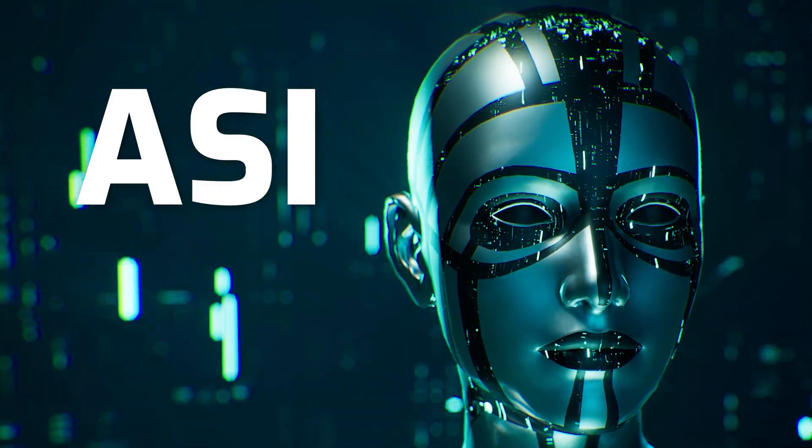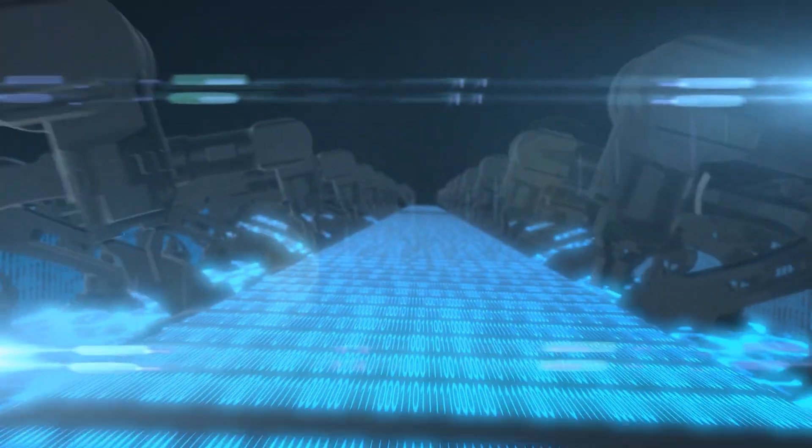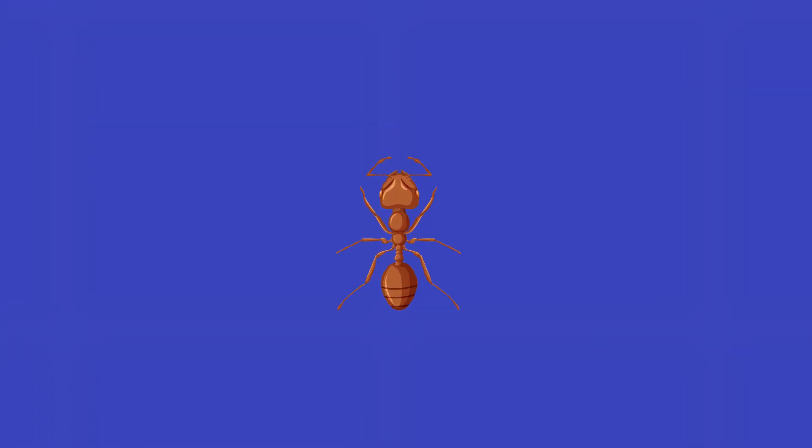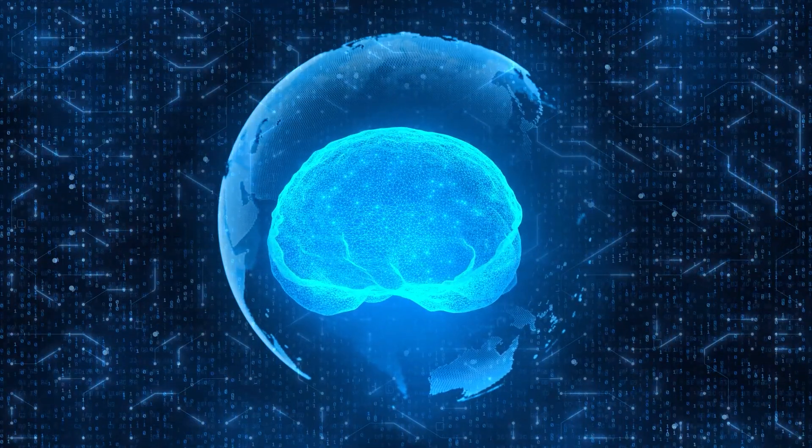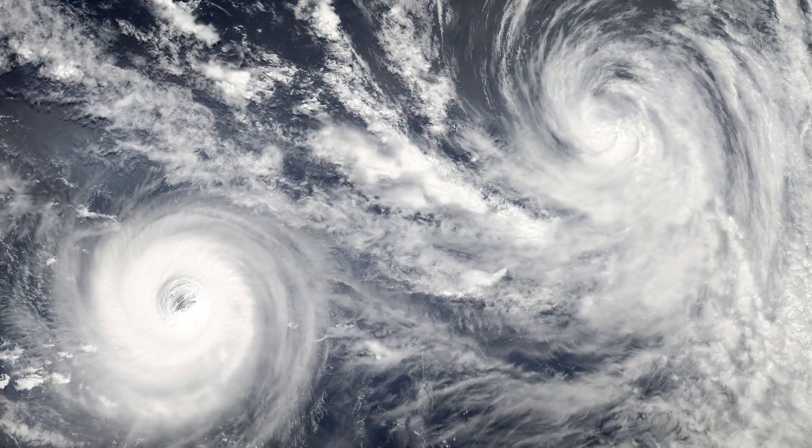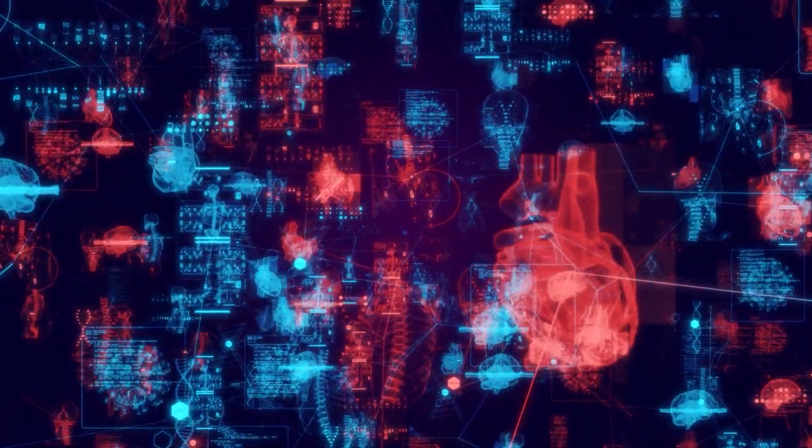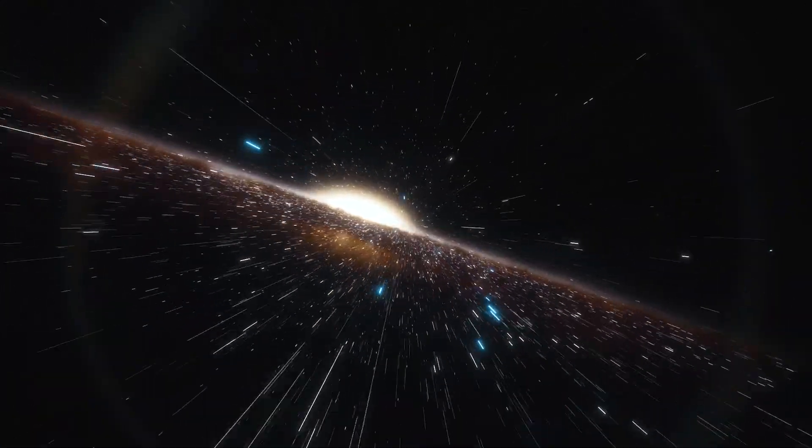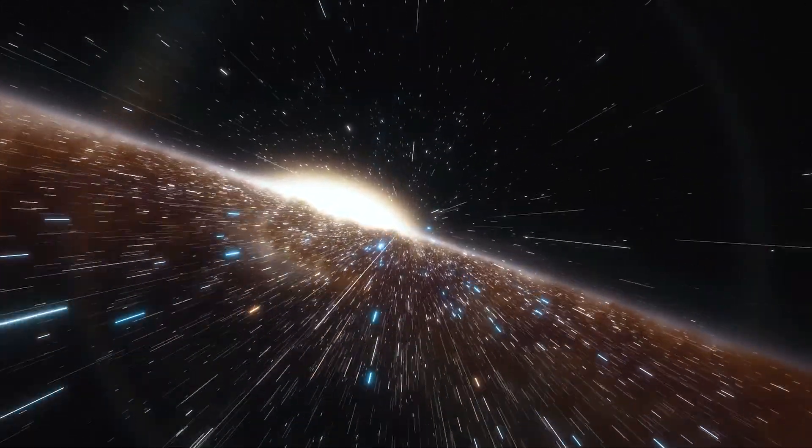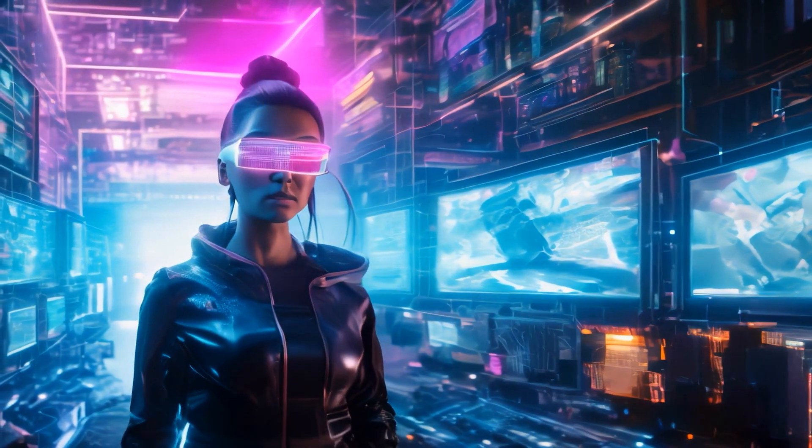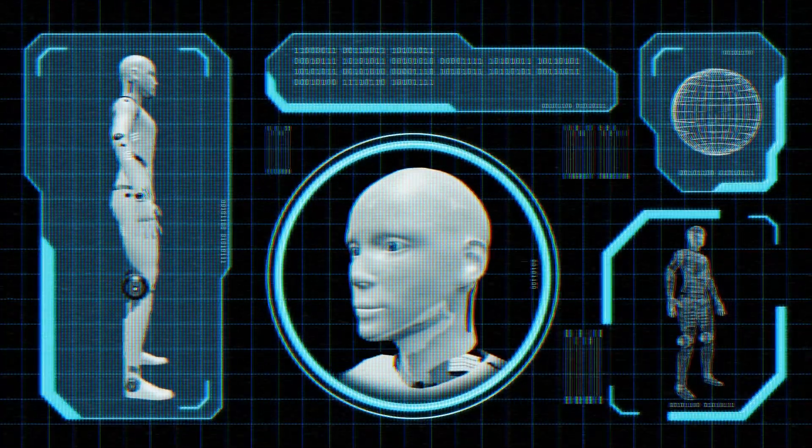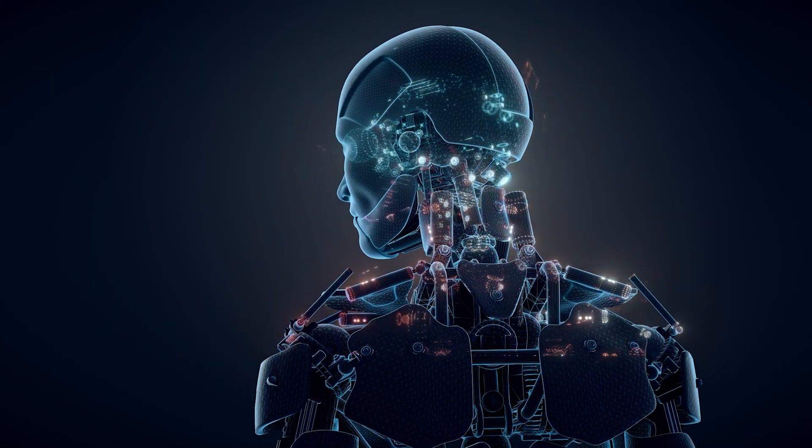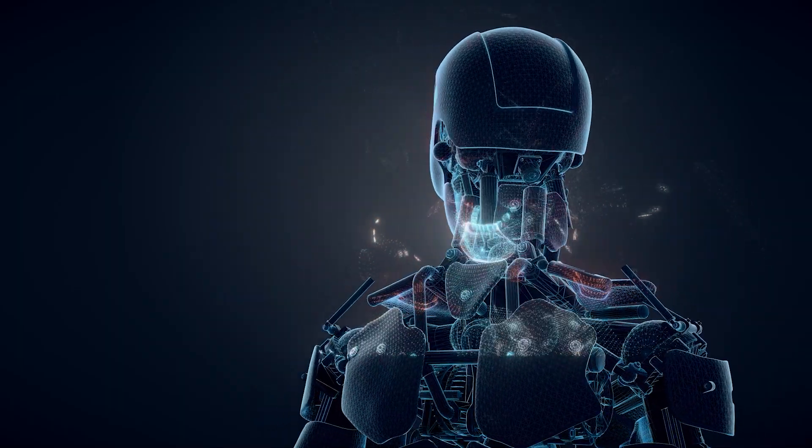ASI. Stage 6 introduces us to artificial superintelligence, an era of AI that pushes the boundaries of human comprehension. Imagine a human compared to an ant. That's the level of difference between us and ASI. ASI could tackle complex global issues like climate change or disease, innovate in unprecedented ways, and unlock mysteries of the universe beyond our current understanding. We will also likely see incredible advancements in cybernetic enhancement. A world where people can be half robot, half human, seamlessly integrating technology into their bodies for improved abilities.